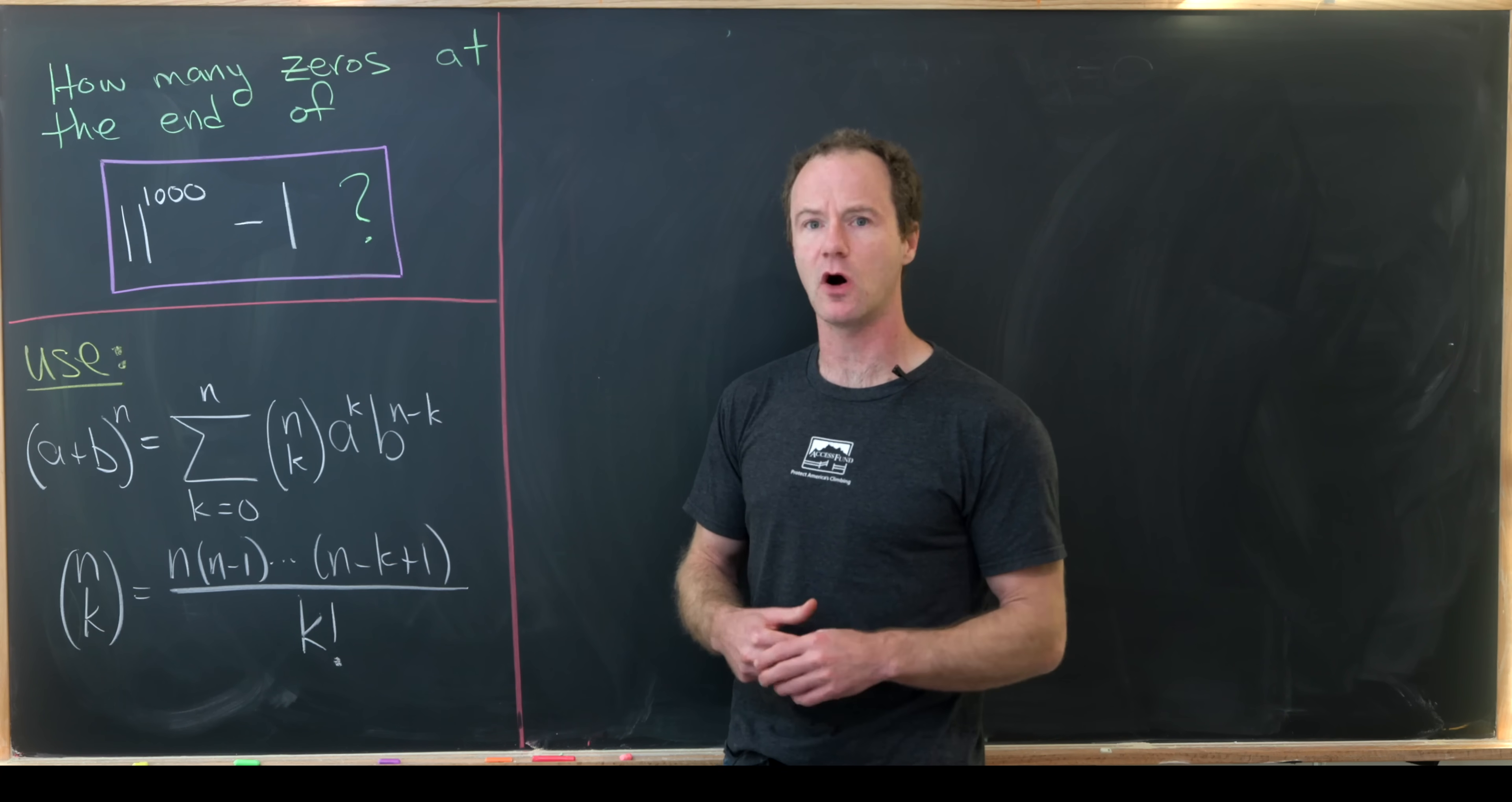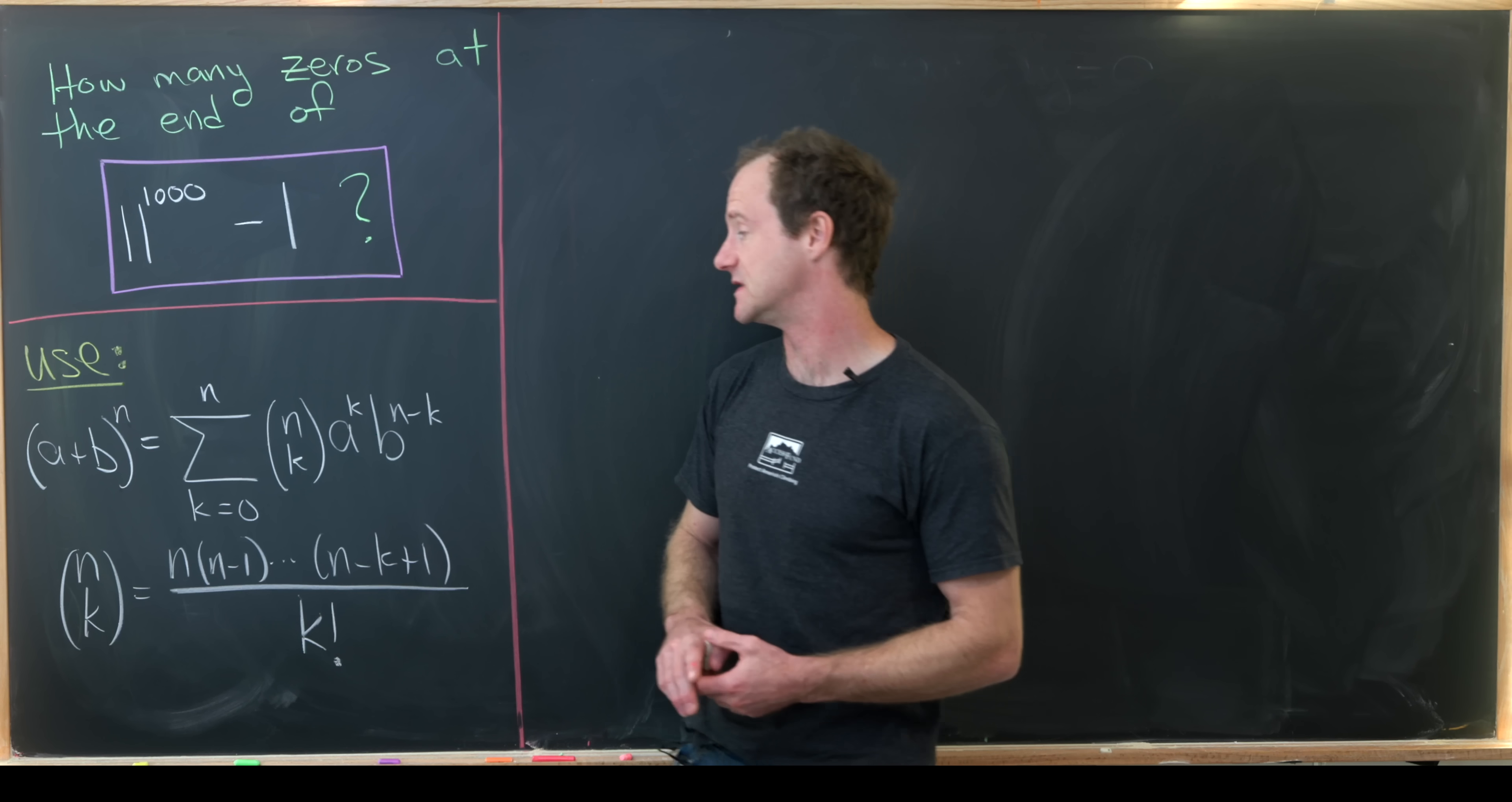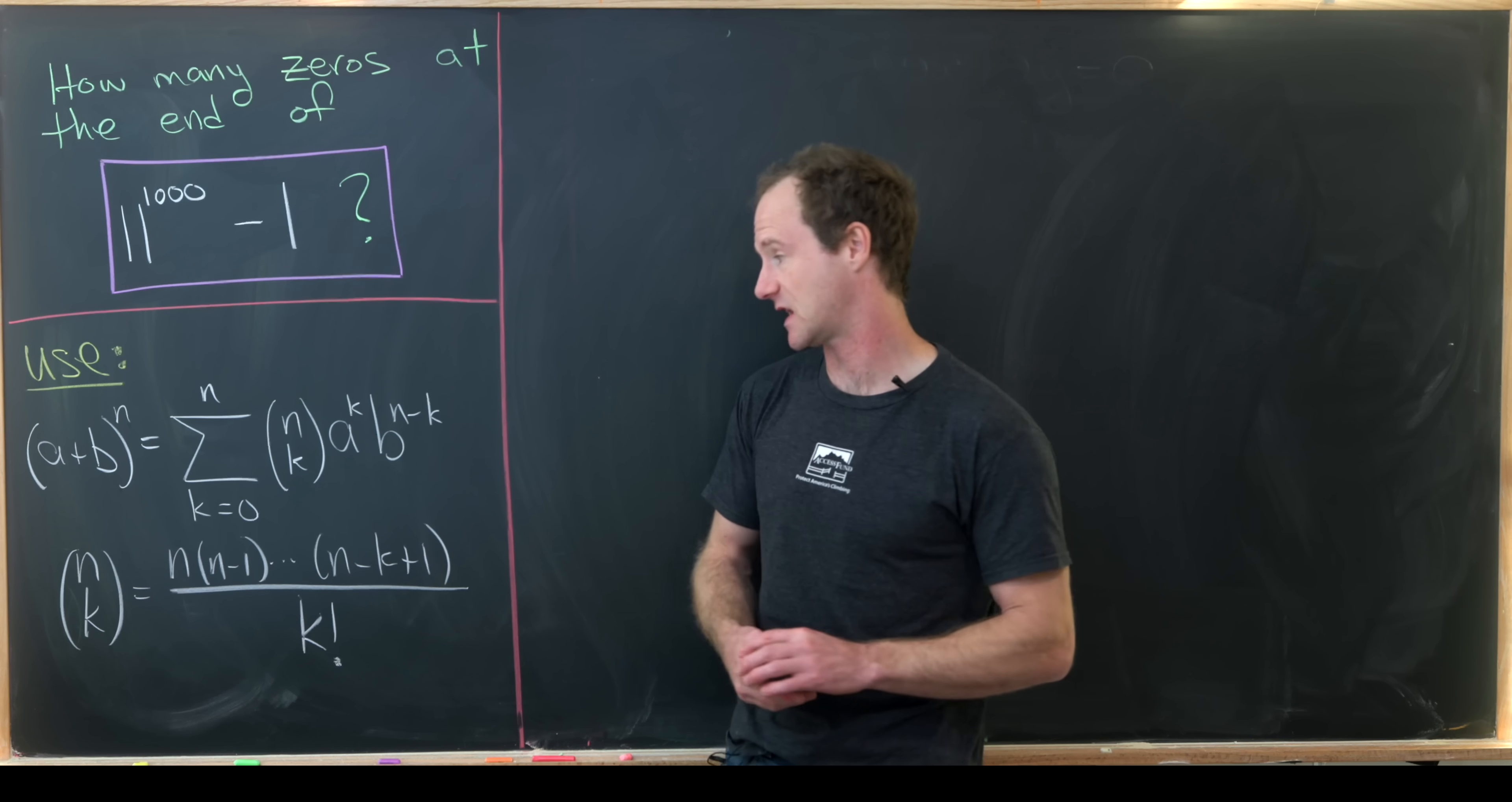So let's recall what that is real quick. It says that we can write a plus b to the nth power as the sum as k goes from 0 to n of n choose k and then a to the k b to the n minus k.